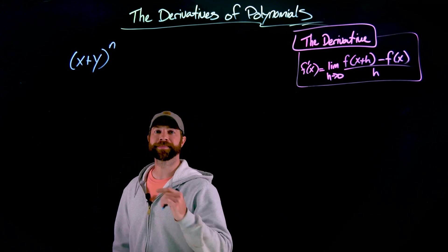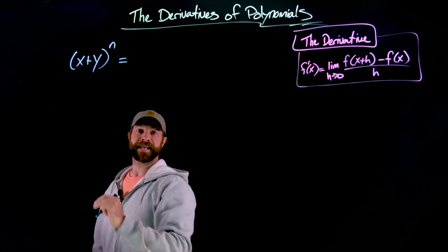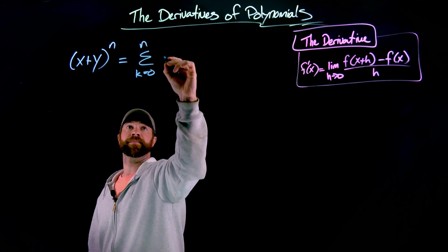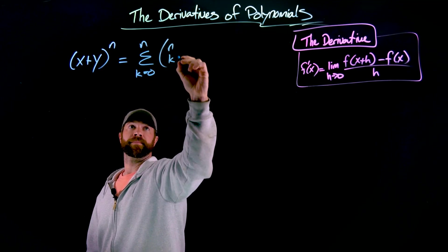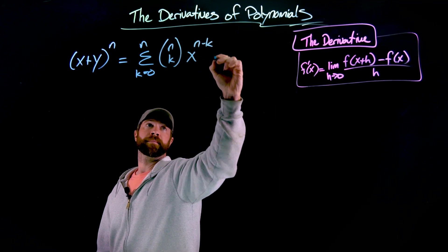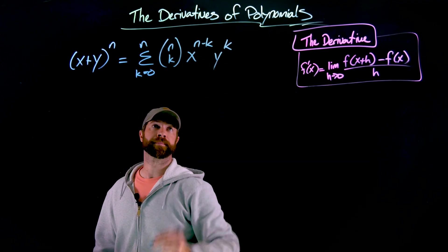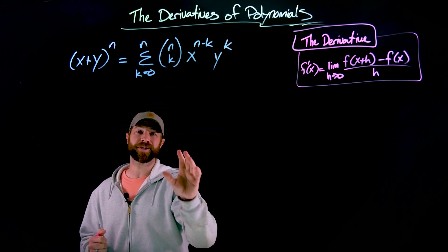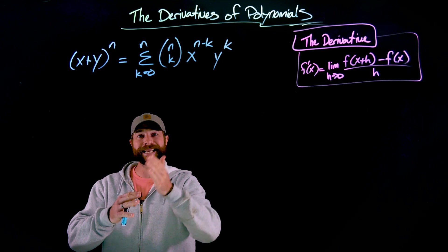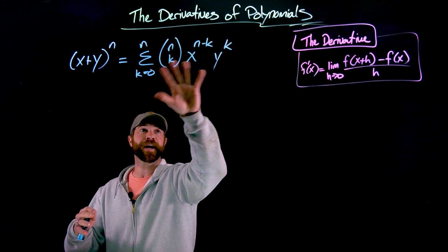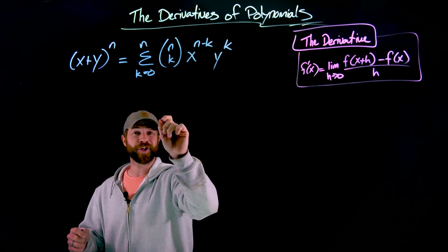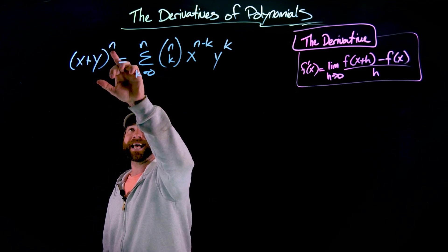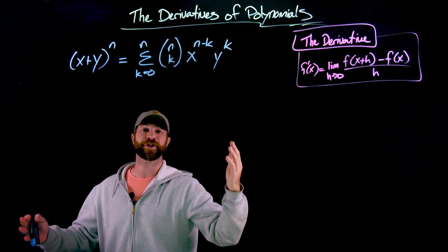The binomial theorem tells us that when you expand this expression right here, it'll be defined by this summation. I'm not going to spend the time right now detailing all this notation, but just so you know, this is a summation. This creates a series of terms that are defined by this part right here. K will start at zero and go to n. n is a fixed number in this formula. It's the exponent that you have right here. It could be a 3, it could be a 5, it could be a 10.